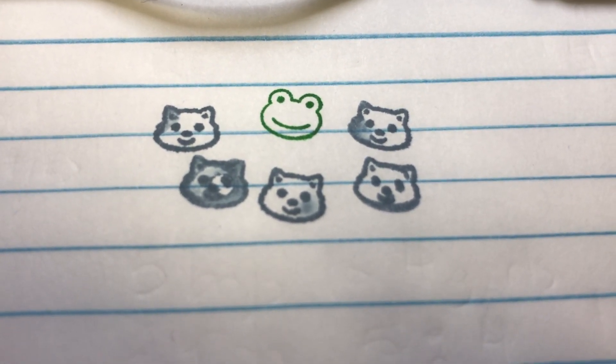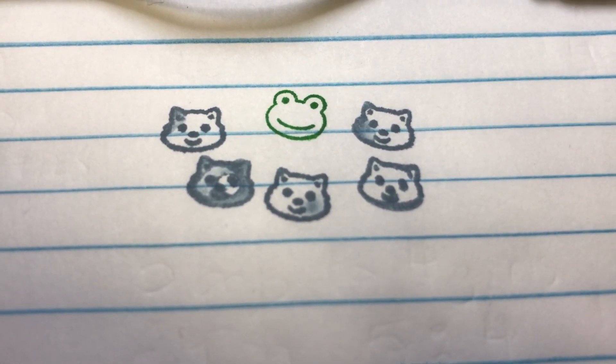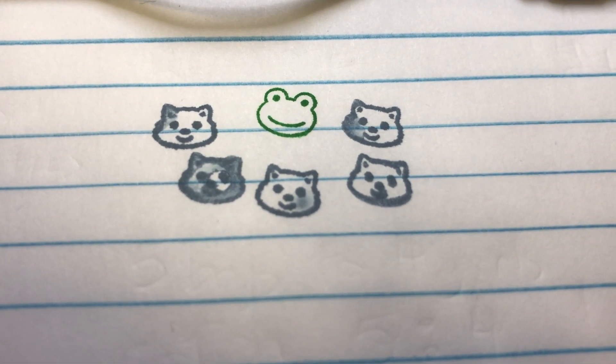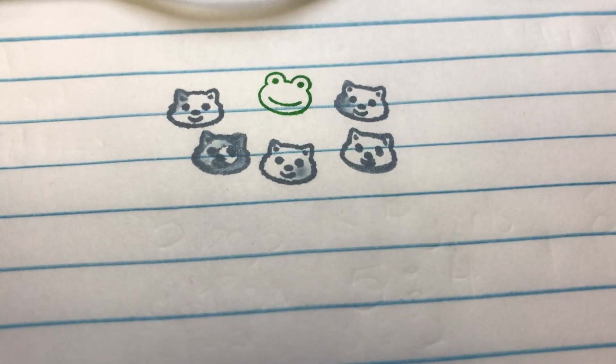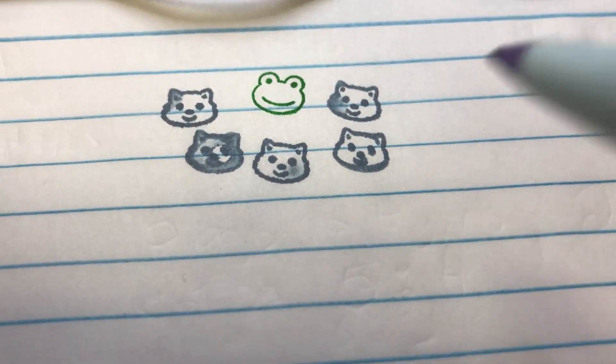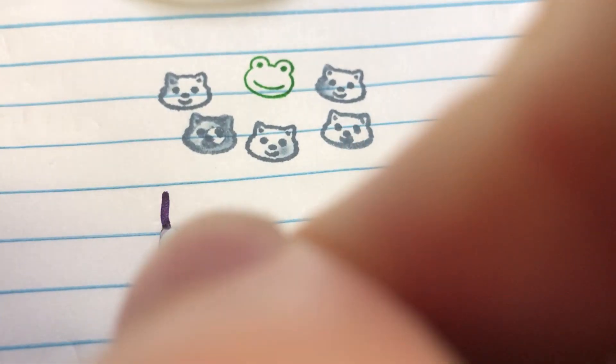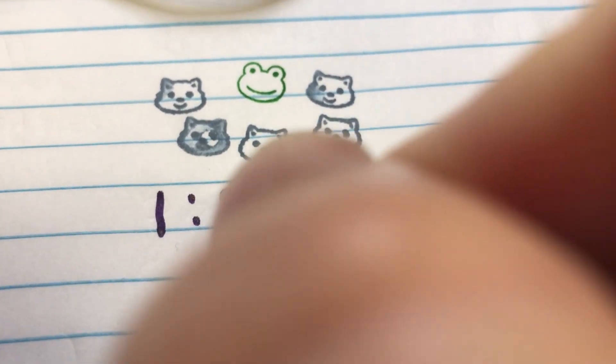What is the ratio of frogs to cats? Well, you make sure you always put the frog first if it's said first. So we write a ratio in three different ways. The number of frogs is one to the number of cats, which is five.